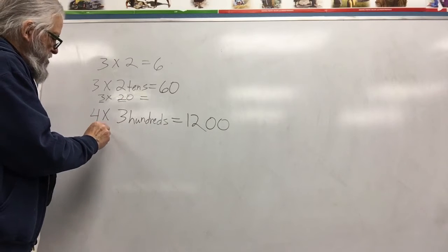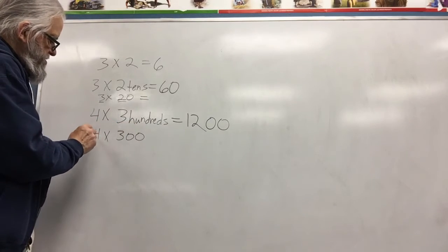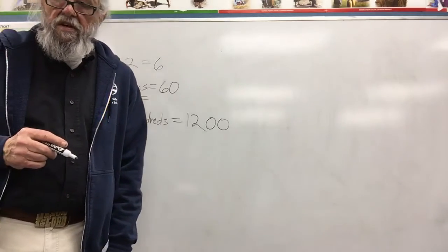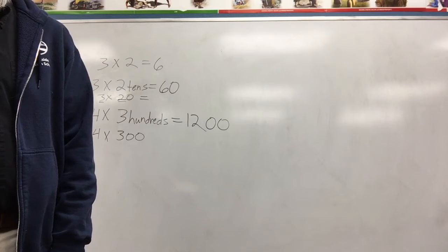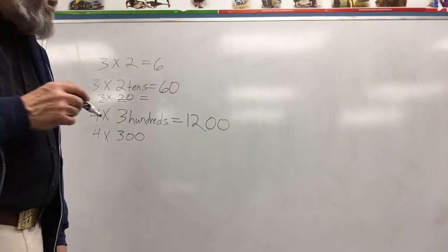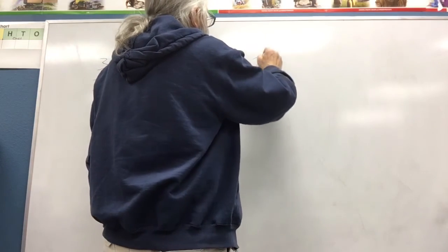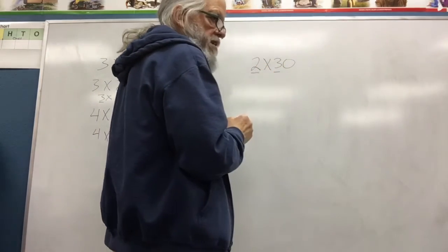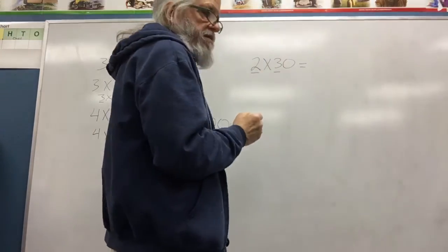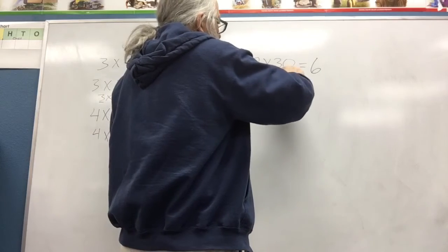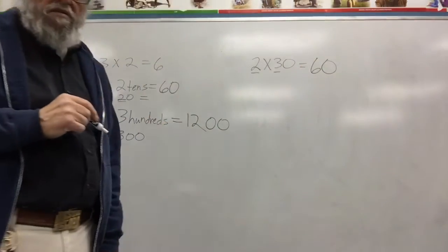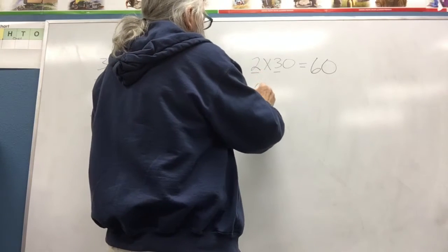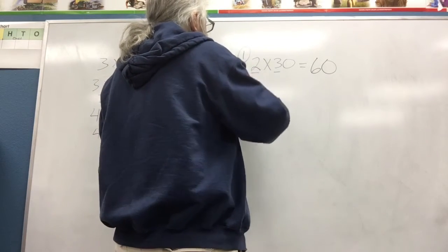So this is 3 times 2 tens, which is 20. What you're seeing here is 3 times 2, but with a 0 after it. Here, this is 4 times 300, so it's still 4 times 3, which is 12, but this is going to have 2 zeros after it. And that's the pattern that they want you to see here. Just like in number 1, it's 2 times 30. This was number 1. This is number 3.